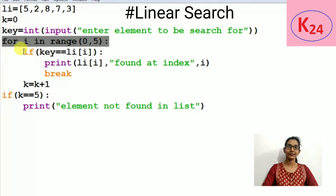In this for loop we use a conditional statement if and check that if key equals li[i], then if the condition is true, it will print the element at the particular index and break the loop.